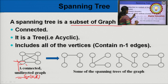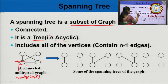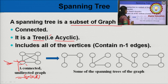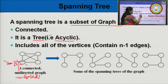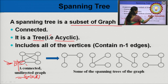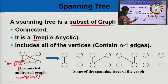So, there are a few properties of these spanning trees: it is connected, it is a tree — that means there is no cycle in the graph — and lastly, it includes all the vertices with minimum number of edges.